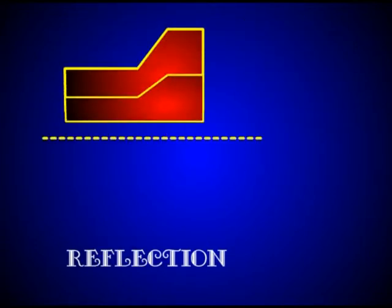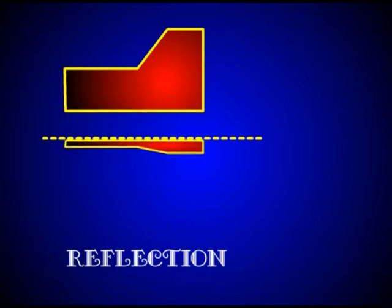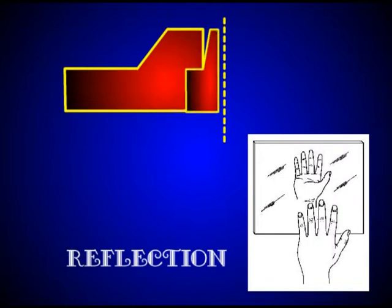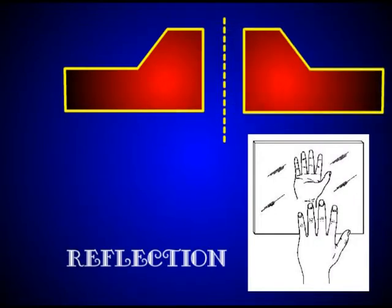Reflection, on the other hand, is like picking the object up out of the plane and flipping it over. The result is the same as looking at the mirror image of the original shape. For instance, your right hand becomes a left hand in the mirror.